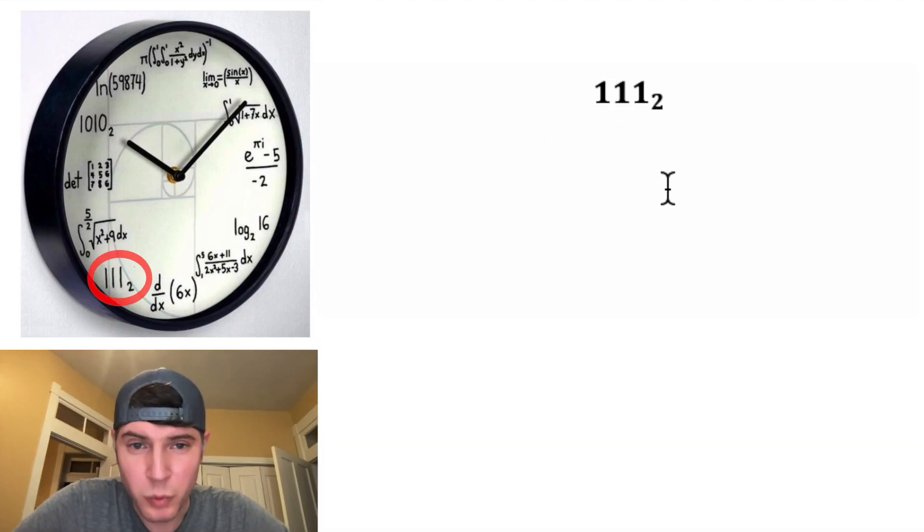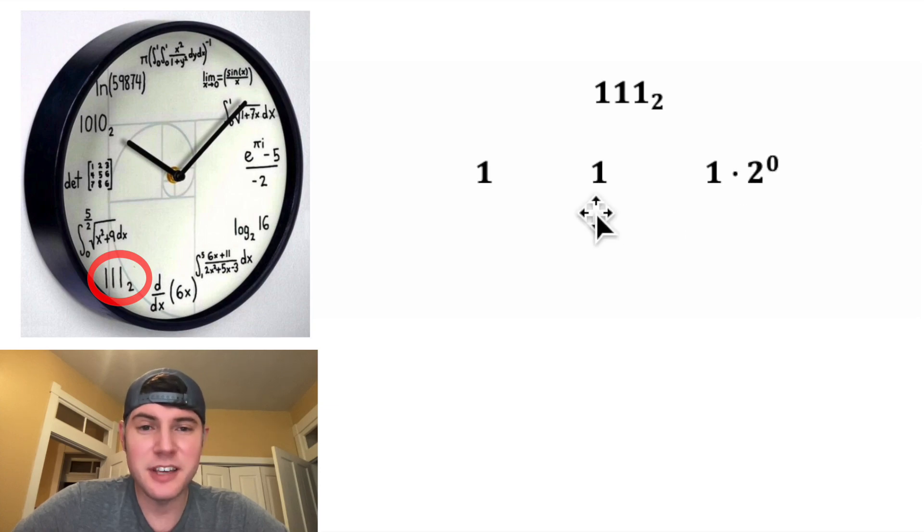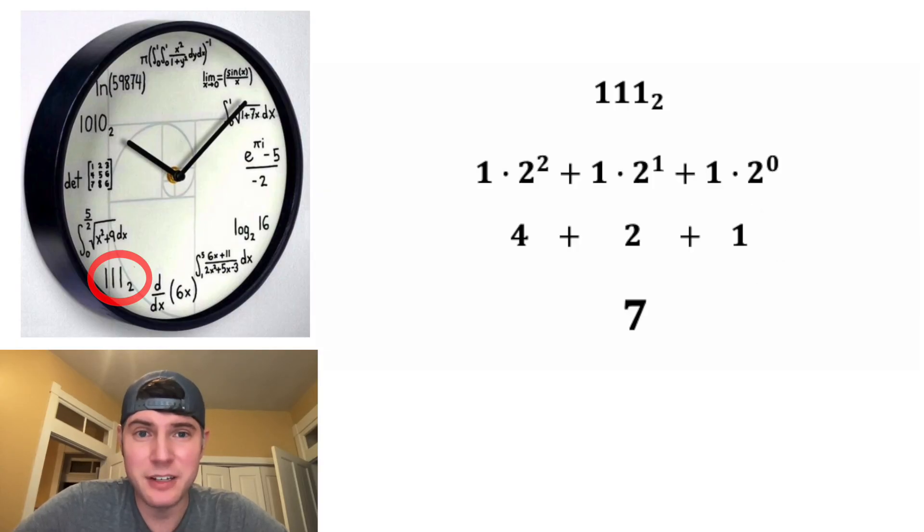Next, we have this one, one, one with this two down here. What this two means is that this one, one, one is in binary. So if we split up the three digits, this first one is two to the zero, the second one is two to the one, and this third one is two to the two. And then we're going to add them all together. One times two squared is four. One times two to the one is two. And one times two to the zero is one. And four plus two plus one is seven. And that's why this is at the seven o'clock hour.